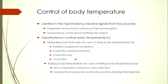The hypothalamic centers work in a feedback loop. The afferent limb comprises signals from two sources: peripheral nerves via cutaneous thermal receptors in contact with the external environment, and the temperature of blood bathing the hypothalamus itself. It receives signals both from the periphery and the core, and any discrepancy in these two readings immediately activates appropriate mechanisms to restore abnormalities.